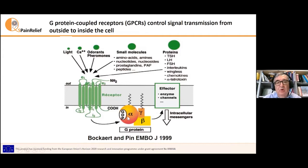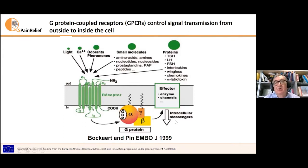The G-protein is composed of three subunits. It binds GDP when it is inactive. After binding the receptor, GDP is exchanged by GTP. This activates the G-protein. The G-protein breaks into G-alpha and beta-gamma subunits, and then they go to the effector system and we have the activation of the effector system. And finally, the observed response.